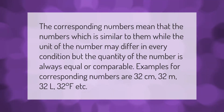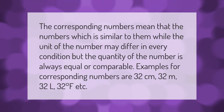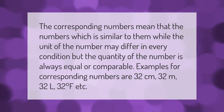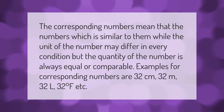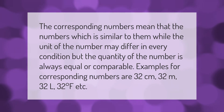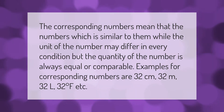Corresponding numbers mean the numbers which are similar to them, while the unit of the number may differ in every condition, but the quantity of the number is always equal or comparable. Examples of corresponding numbers are: 32 centimeters, 32 meters, 32 liters, 32 degrees Fahrenheit, etc.